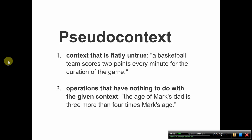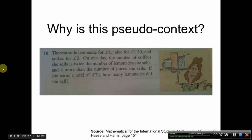An example of pseudocontext: a basketball game where the team scores two points every minute for the duration of the game is ridiculous — no basketball game is like that. The second type is when the things kids are expected to do in the problem are not realistic. For example, calculating ages using an expression like 'Mark's age is three times more than four times Mark's age' — nobody calculates ages this way. Here's a problem: pause the video if you have a chance, read it, and ask yourself why it is pseudocontext.